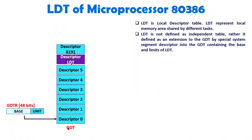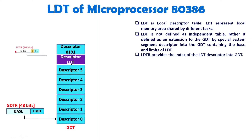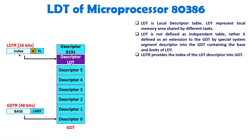So this is a single descriptor inside the GDT which contains the base address and limit of the Local Descriptor Table. To select this LDT descriptor, we have the LDTR register. You can observe the format of the LDTR register: it has an index field, then a TI bit, and a privilege level. The index is 13 bits in size, so based on 13 bits we can track descriptors 0 to 8191. This index will identify which descriptor inside the GDT is the LDT descriptor. For example, if the index is 5, then it will select descriptor 5 as the LDT descriptor.